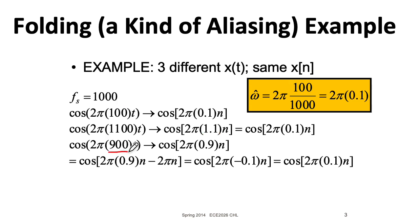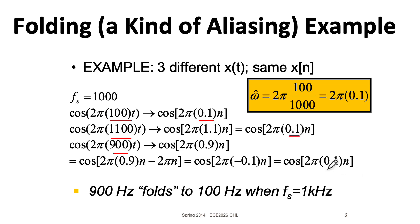What about a 900 hertz wave? 900 divided by 1000 gives me an omega hat of 0.9. Now, let's subtract 2 pi, which we know doesn't change the cosine. That would give me 2 pi times minus 0.1. I know that cosine of negative something is equal to cosine plus that something. So here are three different frequencies, all sampled at 1000 hertz, all gave us the same sequence of numbers inside the computer. Here we say that that 900 hertz folded to 100 hertz. This is a kind of aliasing.